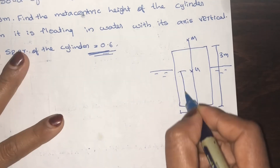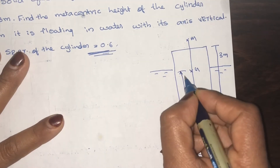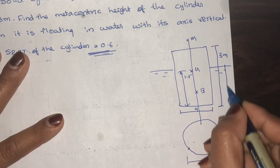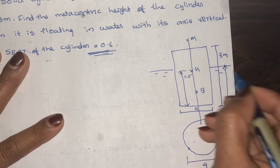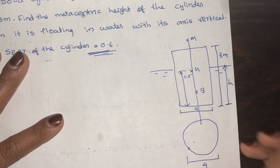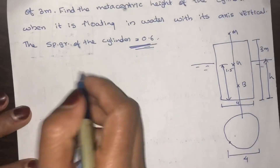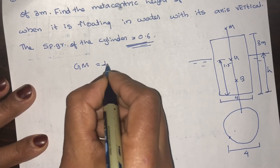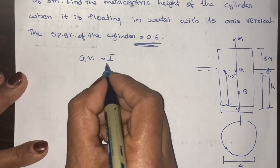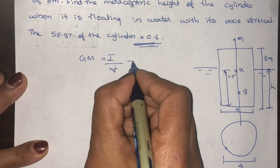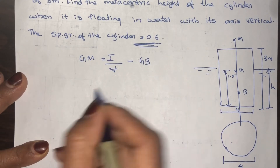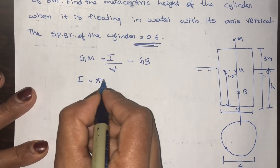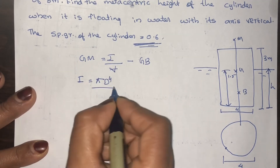1.5 will be the center of gravity. This is the center of buoyancy. The first equation: GM is equal to I divided by the immersed volume, minus GB.